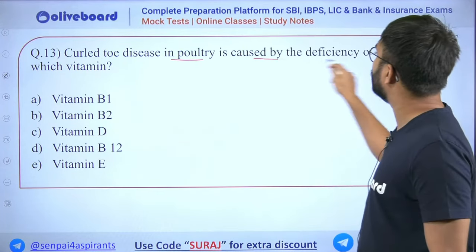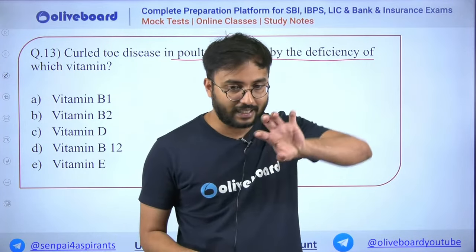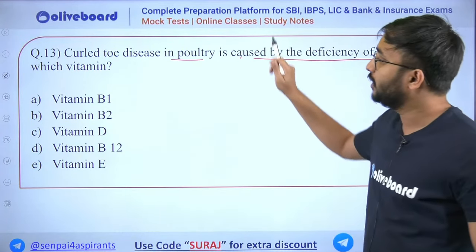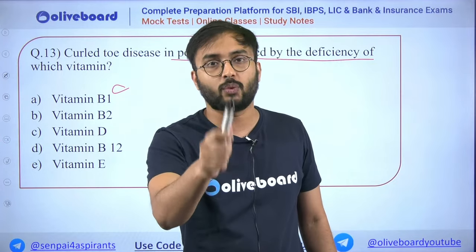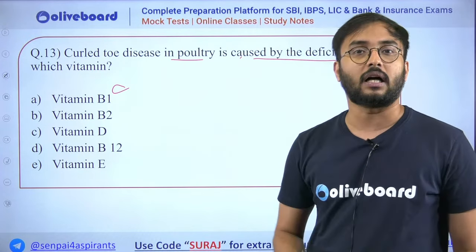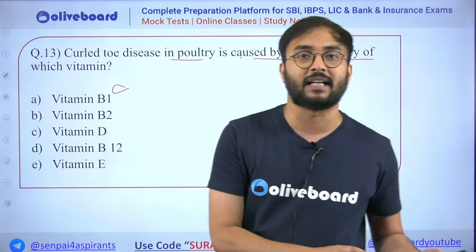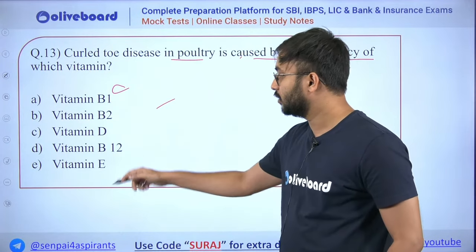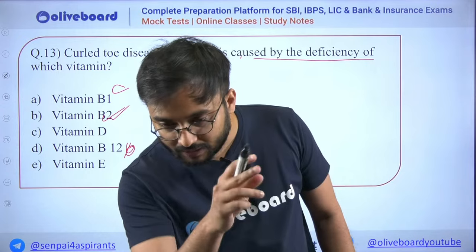Question 13: Curled toe disease in poultry is caused by deficiency of which vitamin? In chickens and hens, toe paralysis — legs get curled — is caused by Vitamin B2 deficiency. The correct answer is Vitamin B2. This is again an example of how deficiency-related questions repeat in exams.